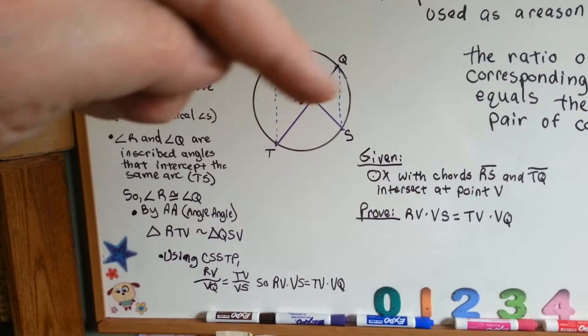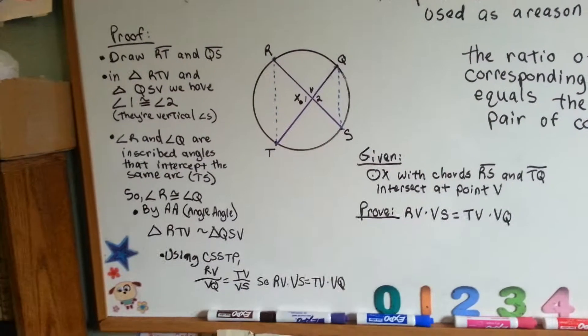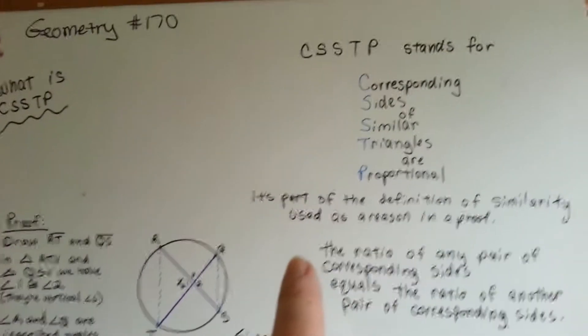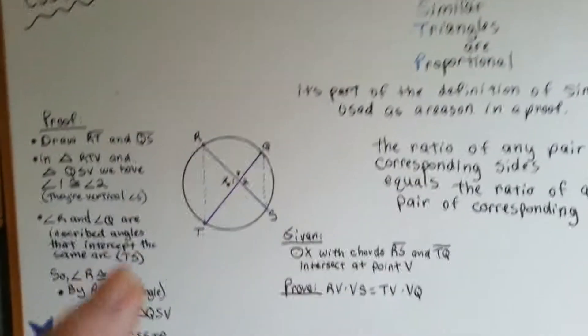So, by reasoning of angle angle, because these are vertical angles here, using the CSSTP, the corresponding sides of similar triangles are proportional.